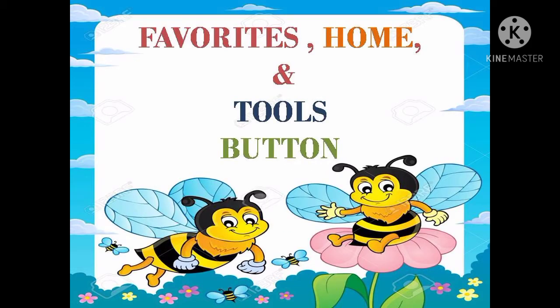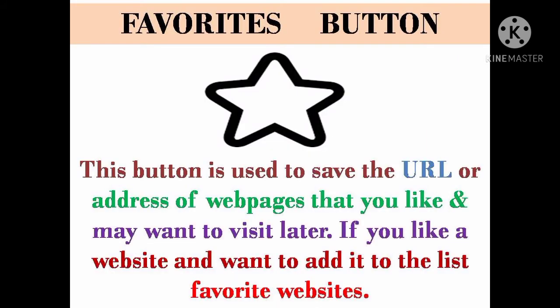Next are the Favorite button, Home button, and Tools button. The symbol of the Favorite button is like a star. This button is used to save the URL or address of web pages that you like and may want to visit later. Suppose you have opened some worksheets and find them very helpful — you can click the star button in the address bar to add that site to your favorites so you can use it again and again.